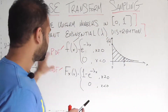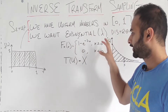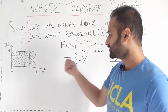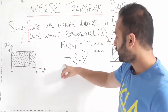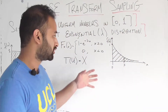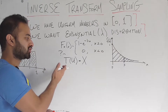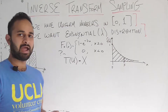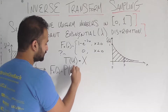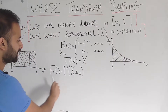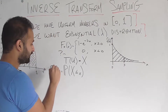Let's focus on the CDF. We want to find a transformation T — a function — such that T applied to our uniform numbers U gives us X, where X follows the exponential distribution. The CDF F_X(x) is by definition the probability that the exponential distribution is less than or equal to x. Since T(U) equals X, we can write this as the probability that T(U) is less than or equal to x.